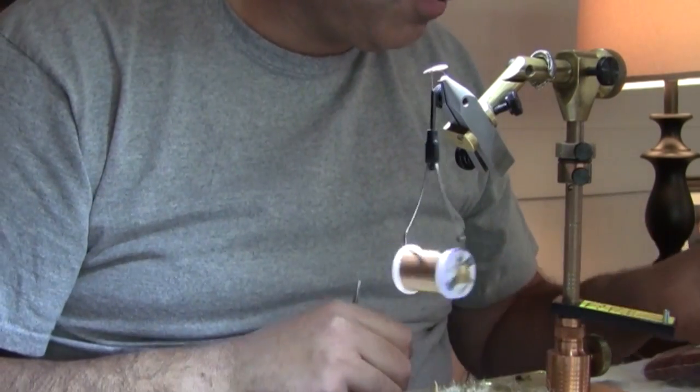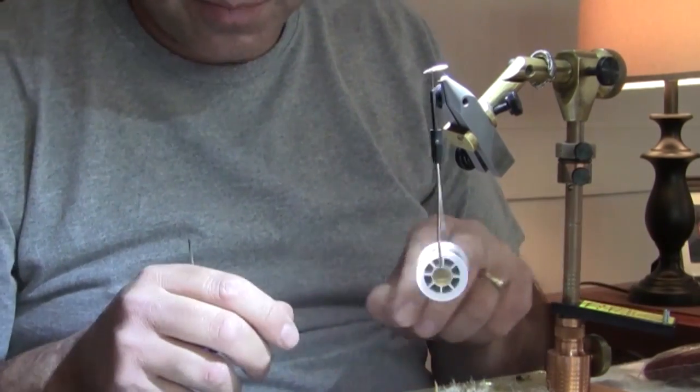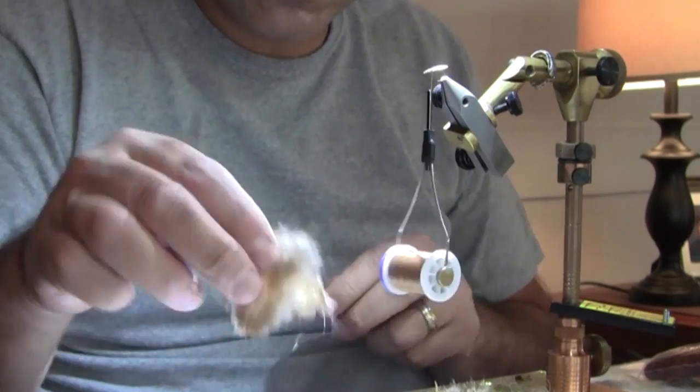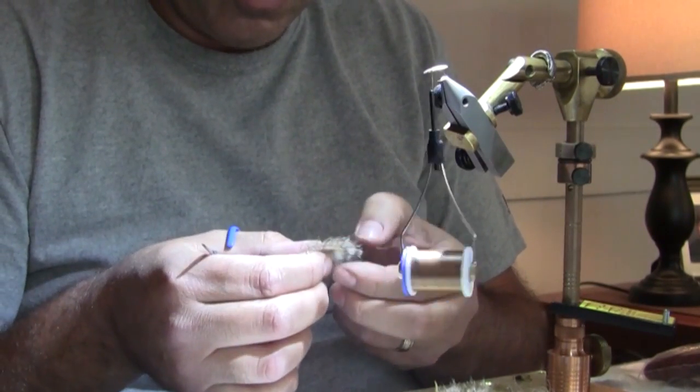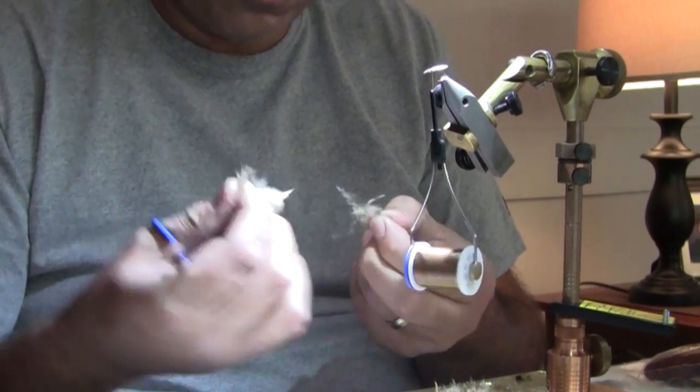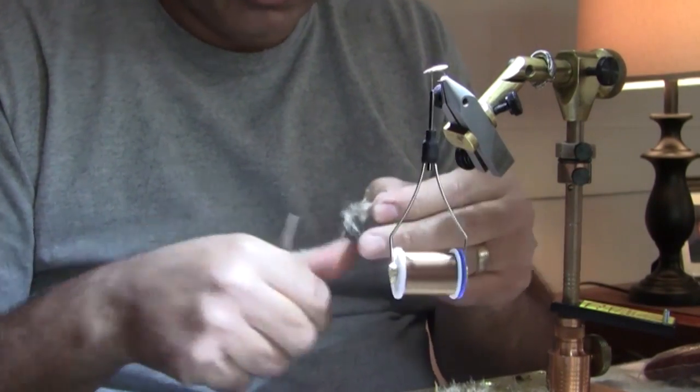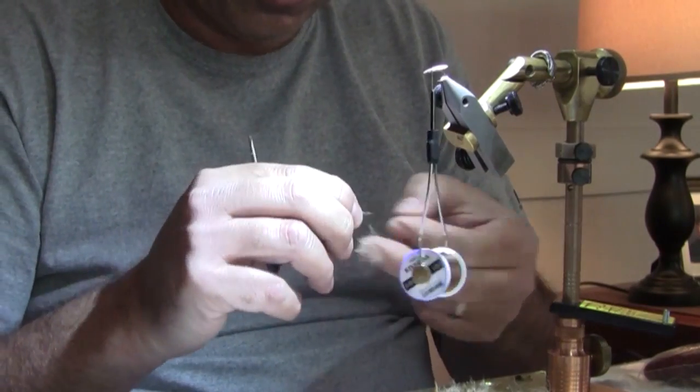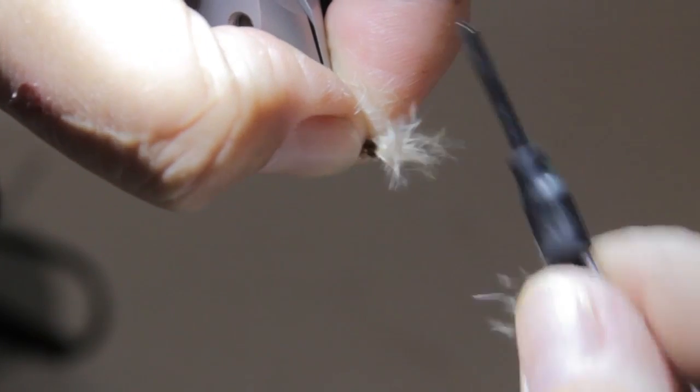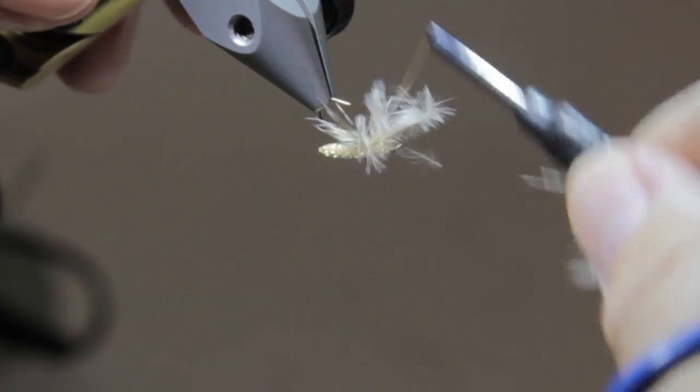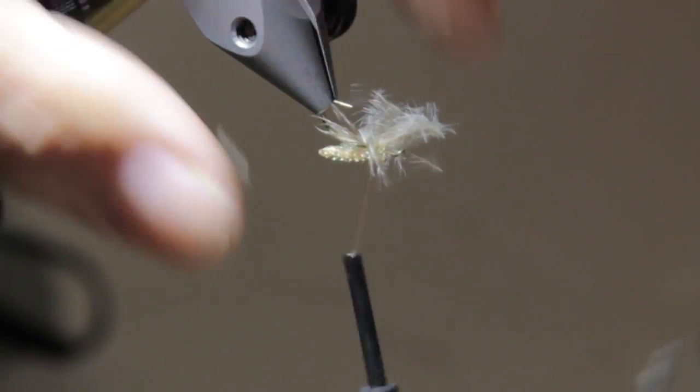Then we're going to take a little bit of tan grizzly marabou and we'll tie in some tips of that. This stuff is a little fluffy and hard to work with, but you can get her manhandled into place. Tie that on as our legs.